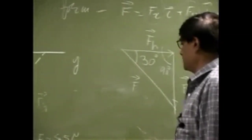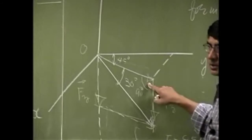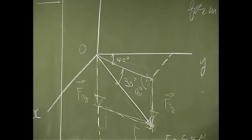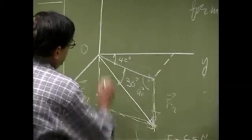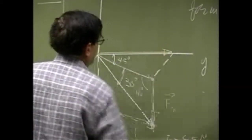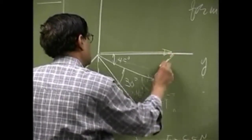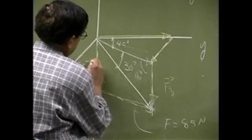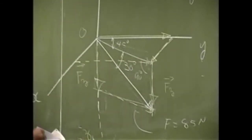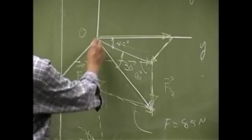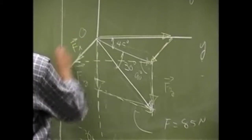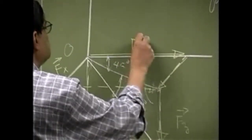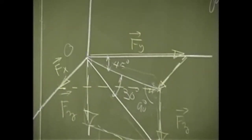Then we go one more step. Now we are going to take the horizontal component FH and divide that up into two components — one along the x-axis and one along the y-axis. The easiest way to do that will be to complete the parallelogram in the x-y plane. Then this will be the x-component and this here will be the y-component, similar to the second parallelogram in the x or y plane.